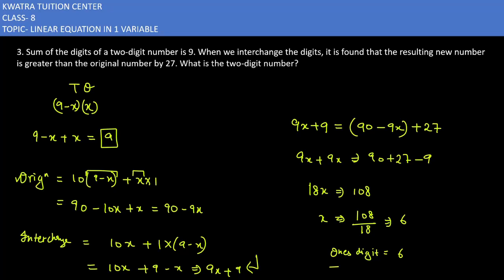And the tens digit is 9 minus 6, which equals 3. So the two-digit number we have is 36. If you interchange the locations, the new number would be 63.